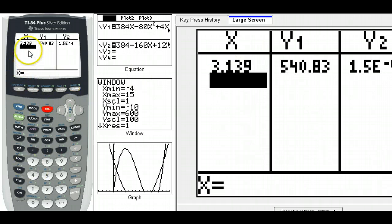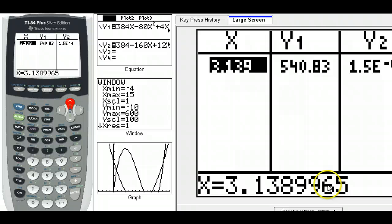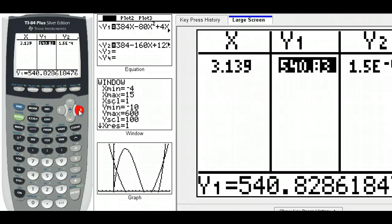So my zero turned out to be at 3.13, and I can give you more digits here. If I add quite a few digits there from my calculation for the zero, and then I plug that into my y function, so I'm going to get 540.83. If I need more decimal places, I can go over the top of it. 540.828, that sounds a little bit better.